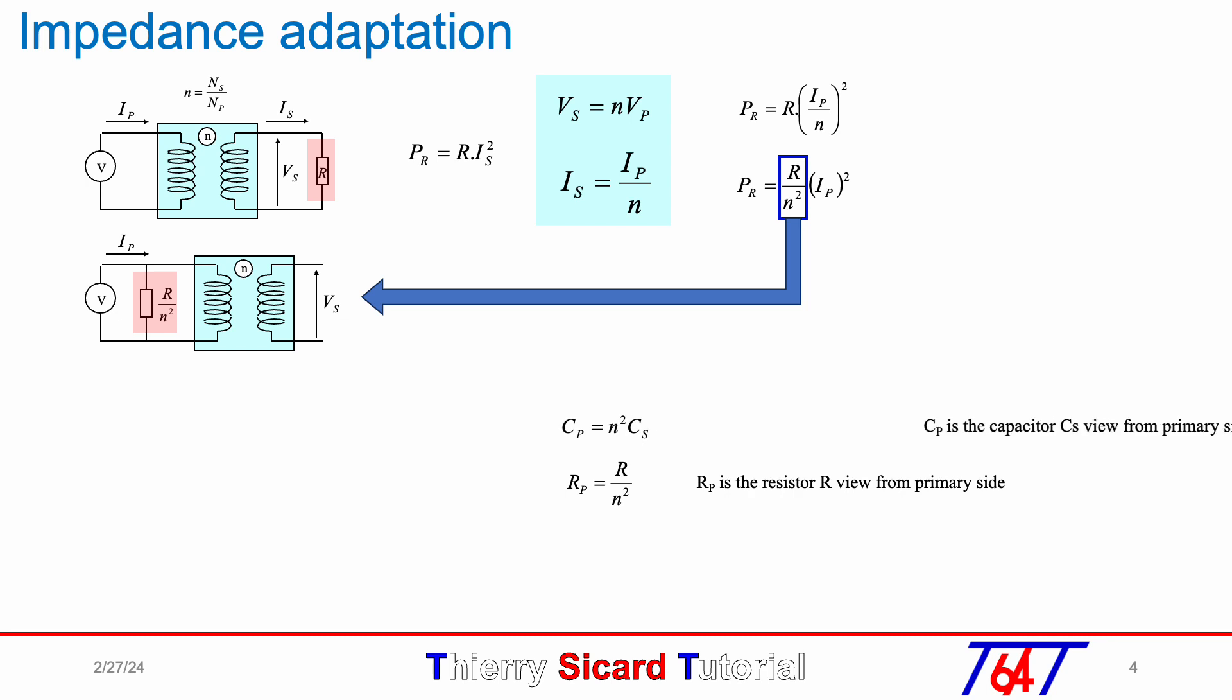For the capacitor, C_P viewed from primary side is n squared times C_S. Of course, R is divided by n squared and C is multiplied by n squared, which means RC value does not change because RC is a time constant.